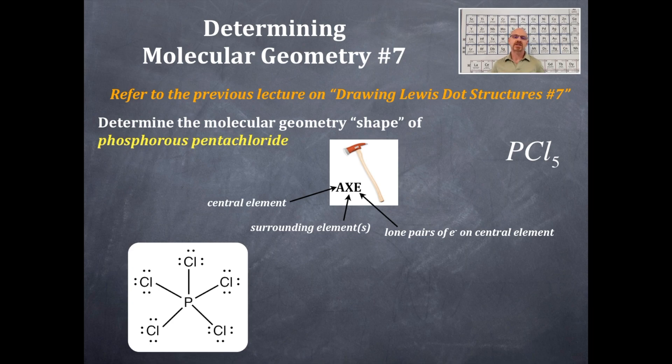The X, the surrounding elements, are the five chlorines. So how many X's do you have? There's five because there's five chlorines. How many lone pairs of electrons do you have on the central element? None.